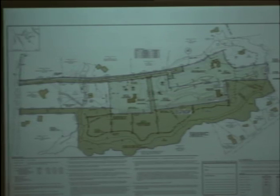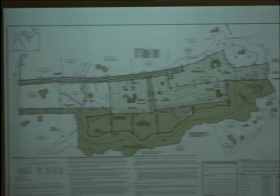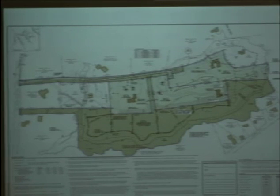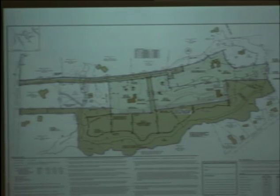As we have reviewed in the past, we're requesting four waivers: the completed HHE-200 forms, the scale not to exceed one inch equals 40 feet, a waiver on the road width from 22 down to 14–15 feet, and the fourth waiver is road alignment — the road alignment deviating slightly from the center line of the 50-foot right-of-way. Are there any questions?